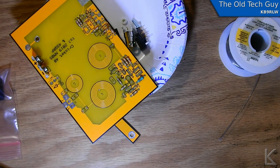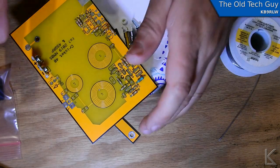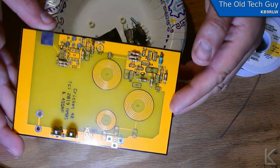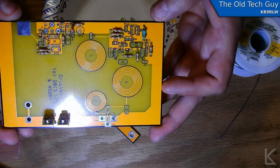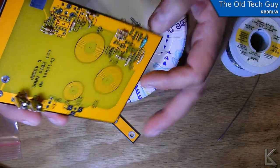Hello YouTubers and fellow hams. Well recently I built this little CW transceiver, low power transceiver, called the Cricket 40 from the Four States QRP group.